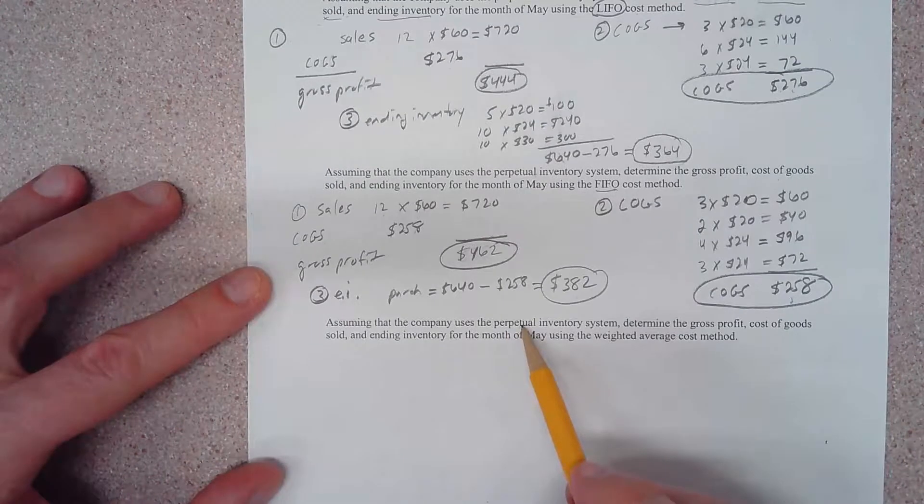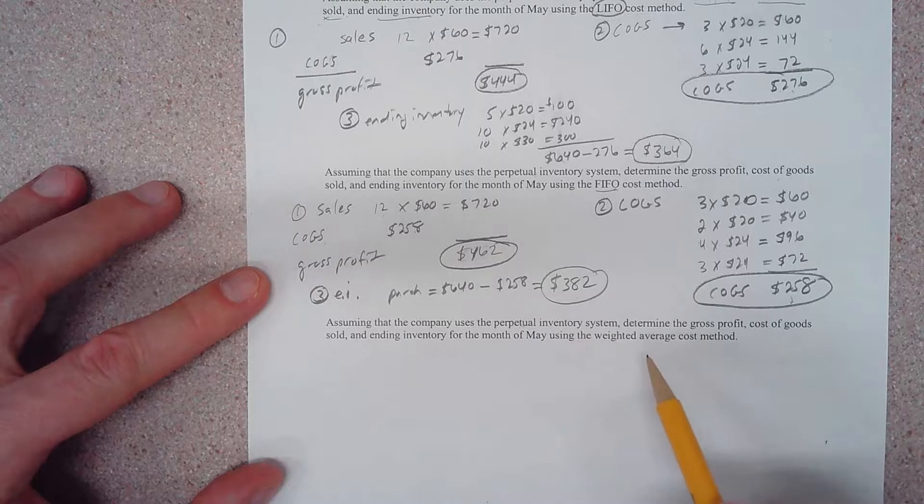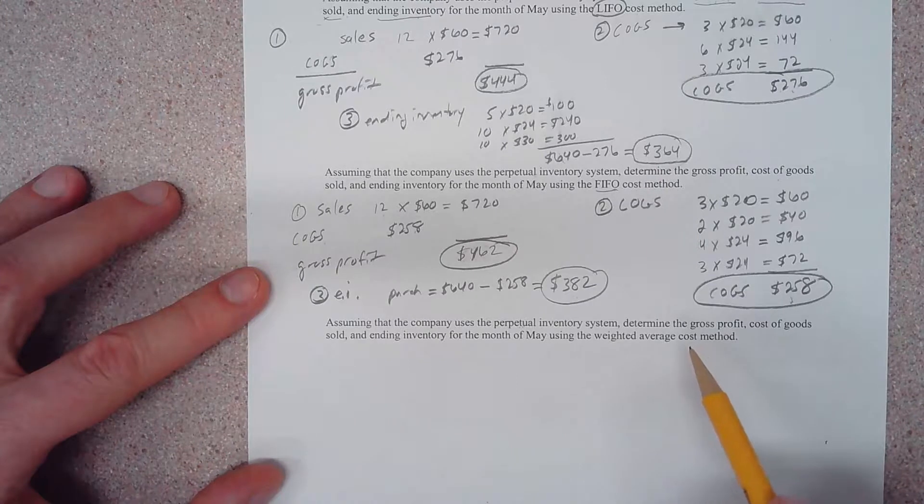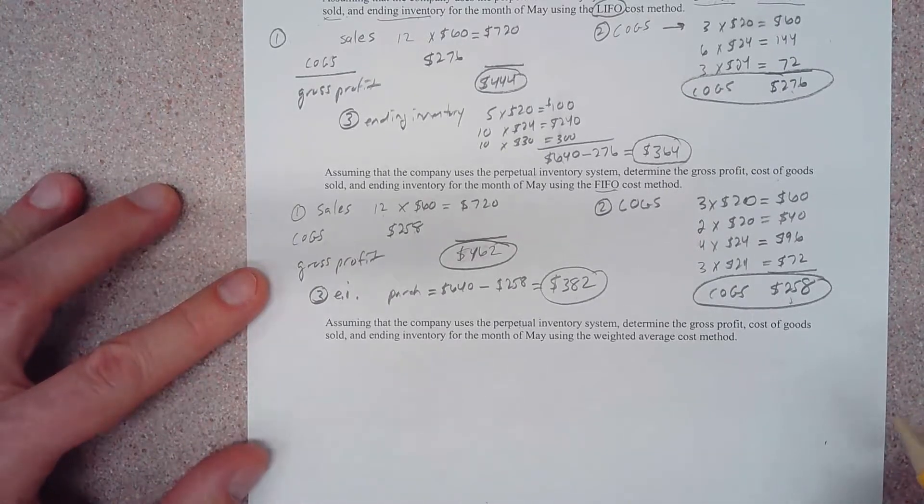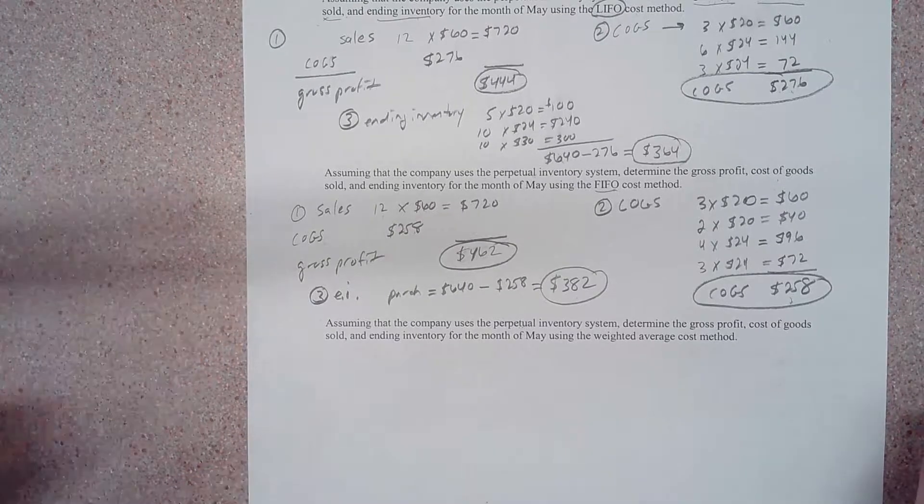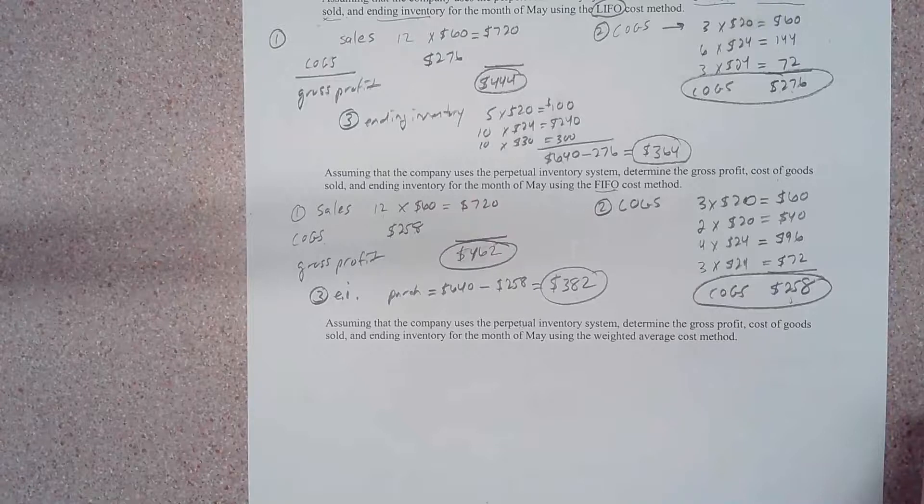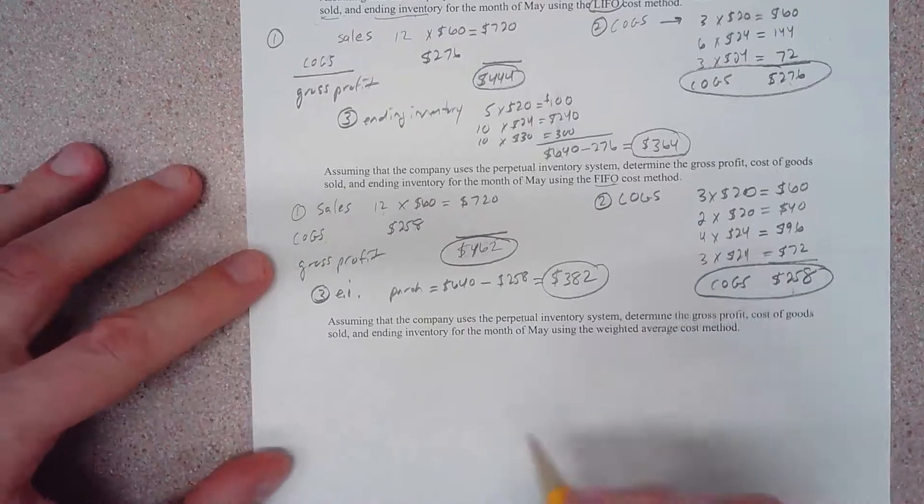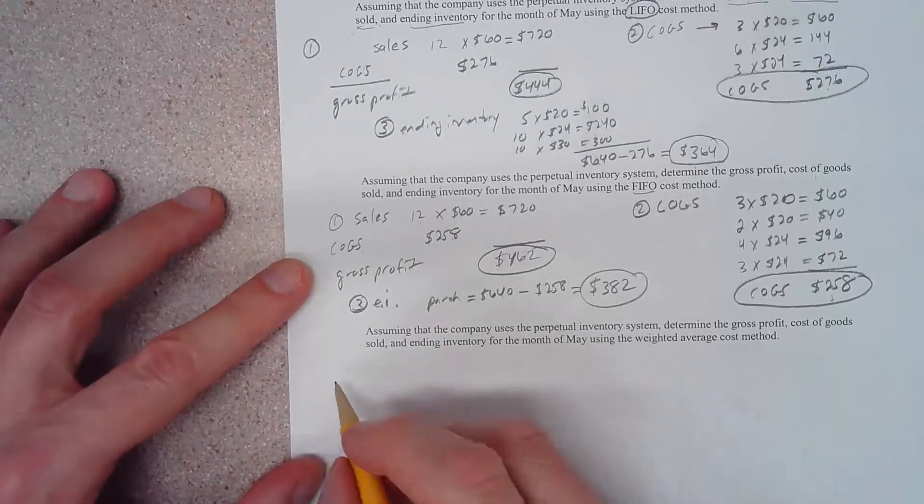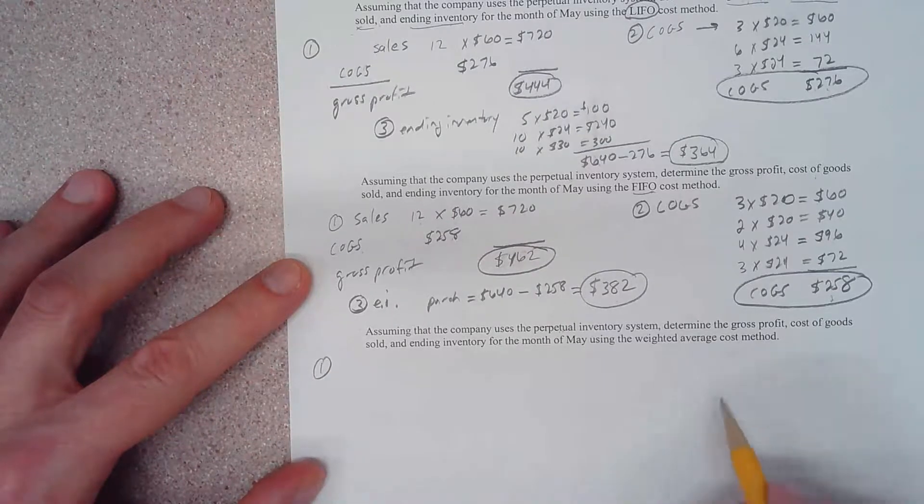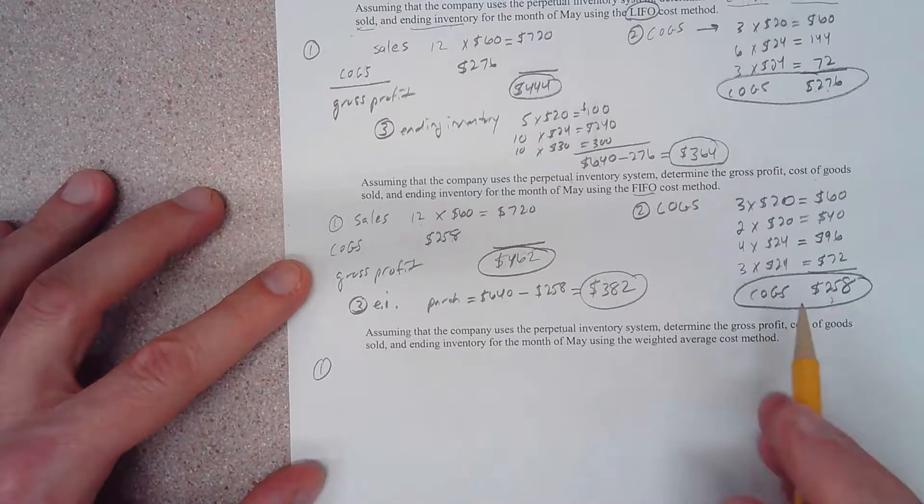That changes things quite a bit. If we were using a periodic inventory system, the weighted average cost method would be extremely easy. However, that's not what we're doing - we're using perpetual, so it's a little bit more difficult. I'm going to have to jump back to get to our scenario here.